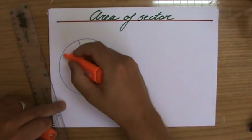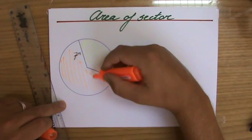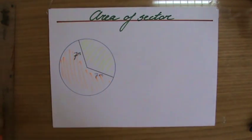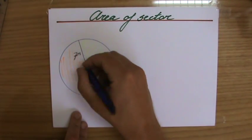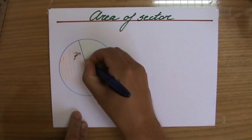And then you would have the major sector, which would be the other side. So it depends on what the question asks you - are they interested in the minor or the major sector? Let's say they're interested in the minor sector.